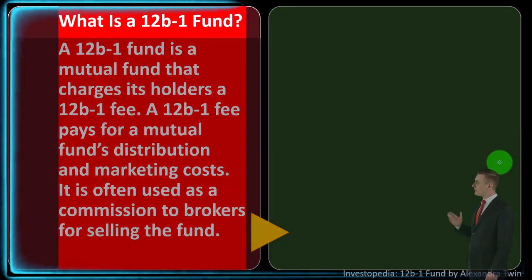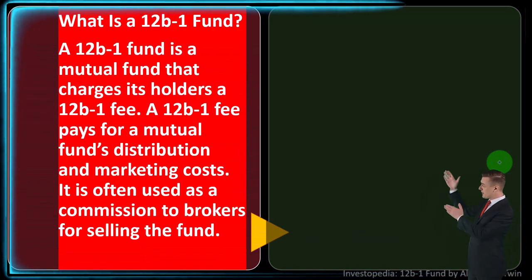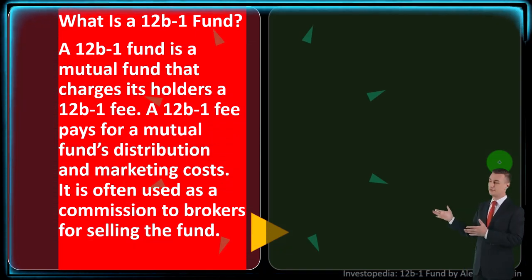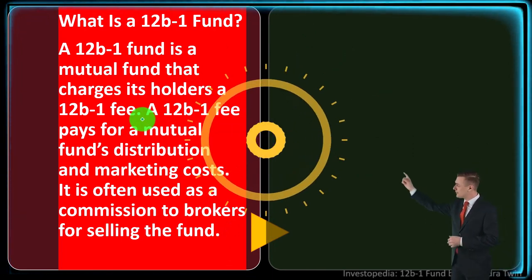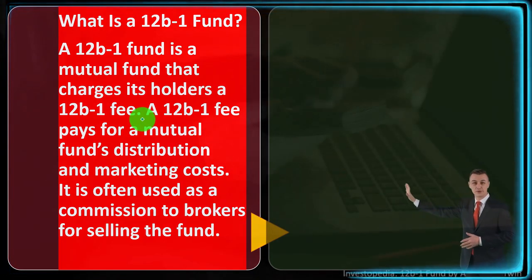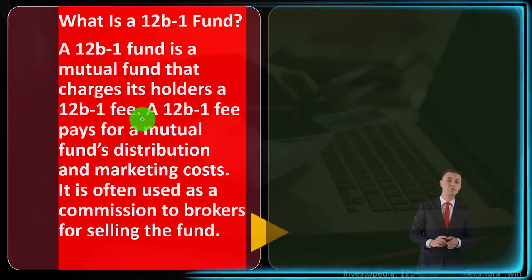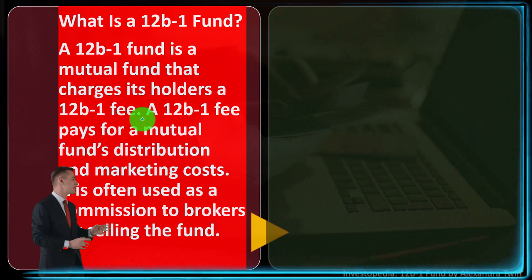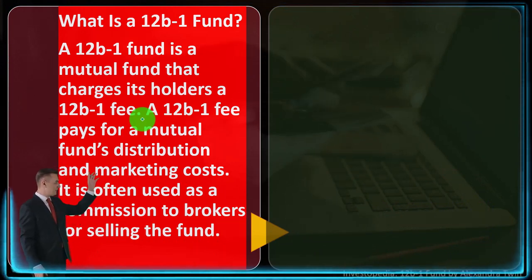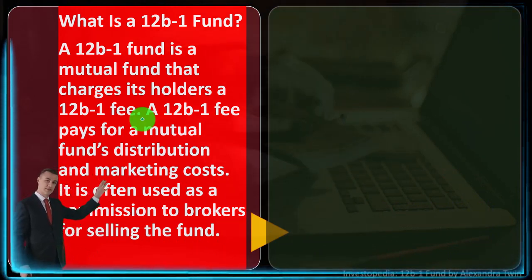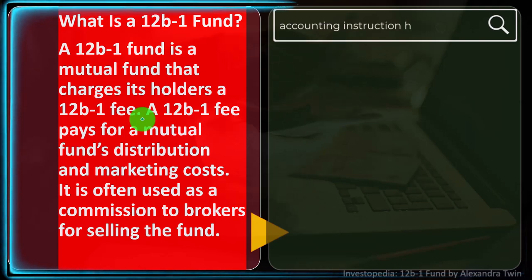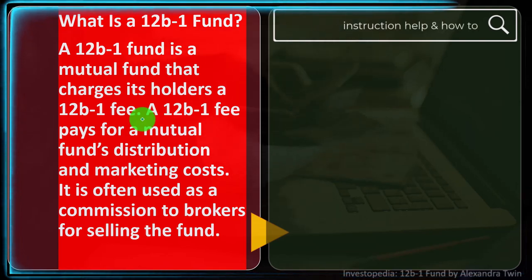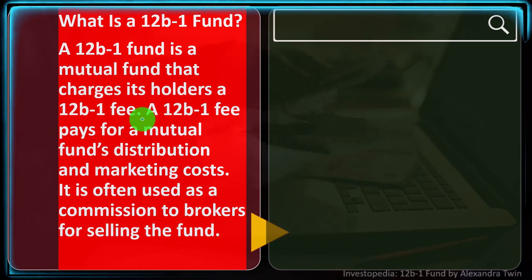What is a 12B1 Fund? A 12B1 Fund is a mutual fund that charges its holders a 12B1 fee. A mutual fund is a fund where we pool our money together with other individual investors so that a fund manager can take that money and put it into investments in accordance with the rules of the fund, which could be broad or more restrictive, allowing us to diversify more easily, possibly with less investment.